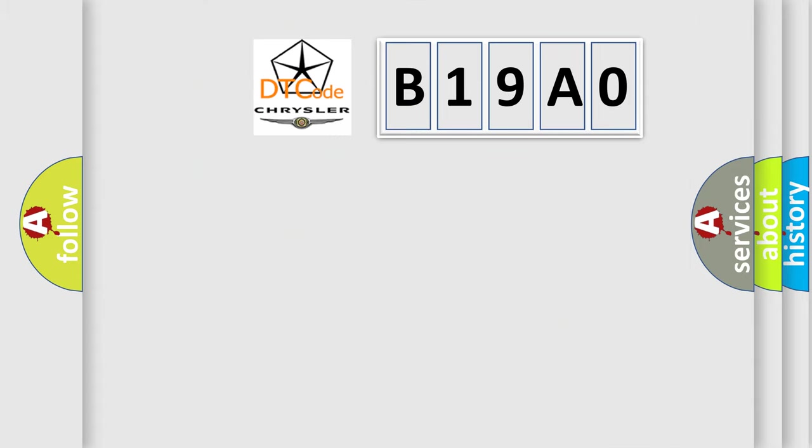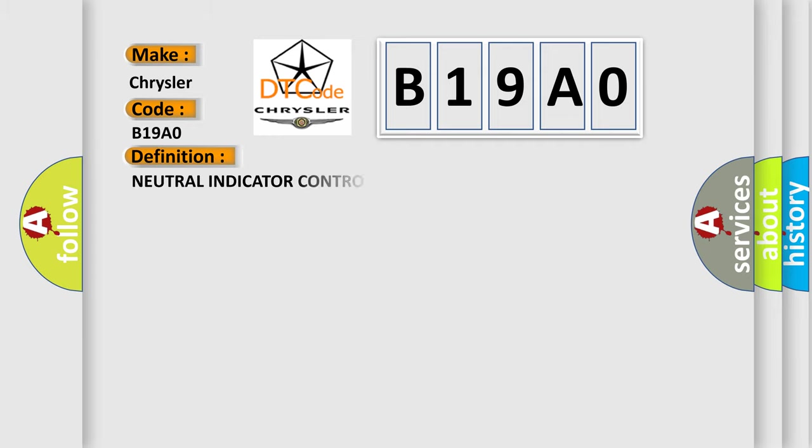So, what does the diagnostic trouble code B19A0 interpret specifically? For Chrysler car manufacturers, the basic definition is: Neutral indicator control circuit low.